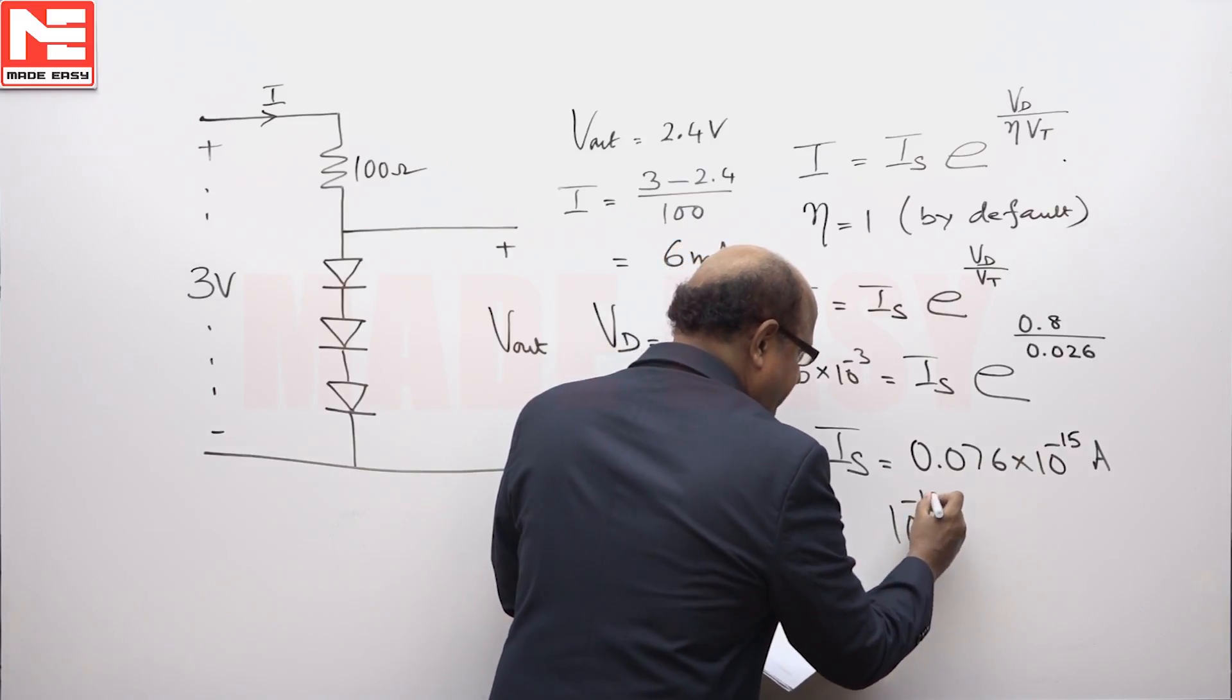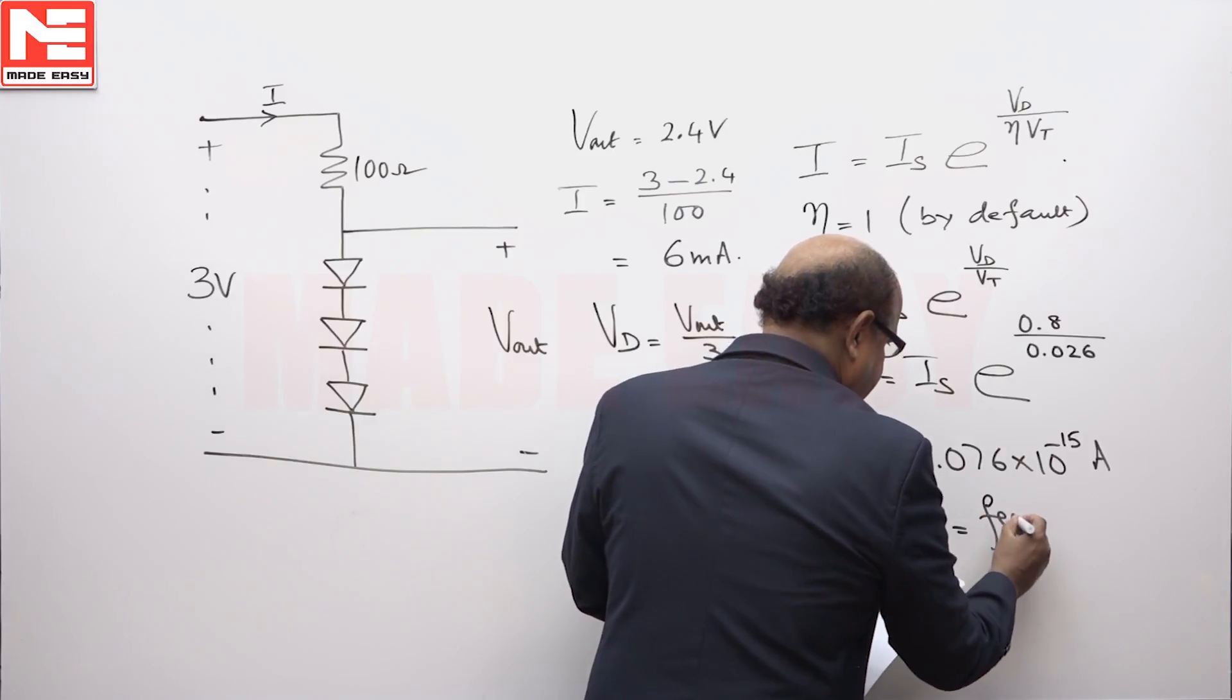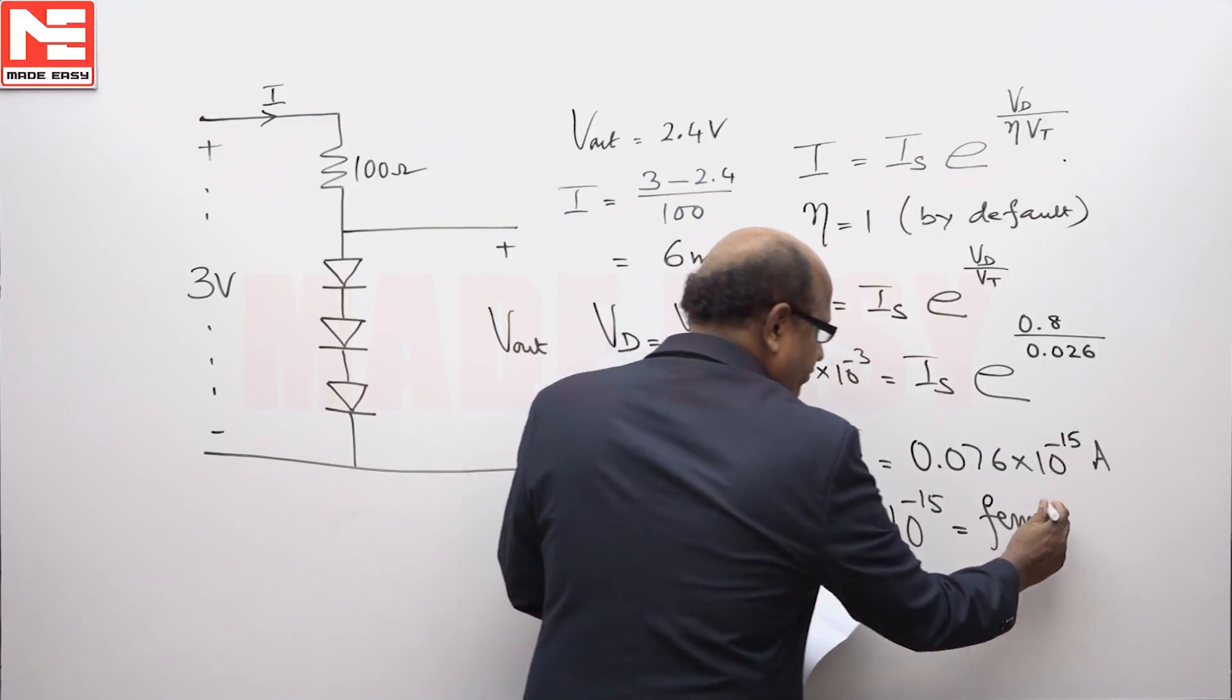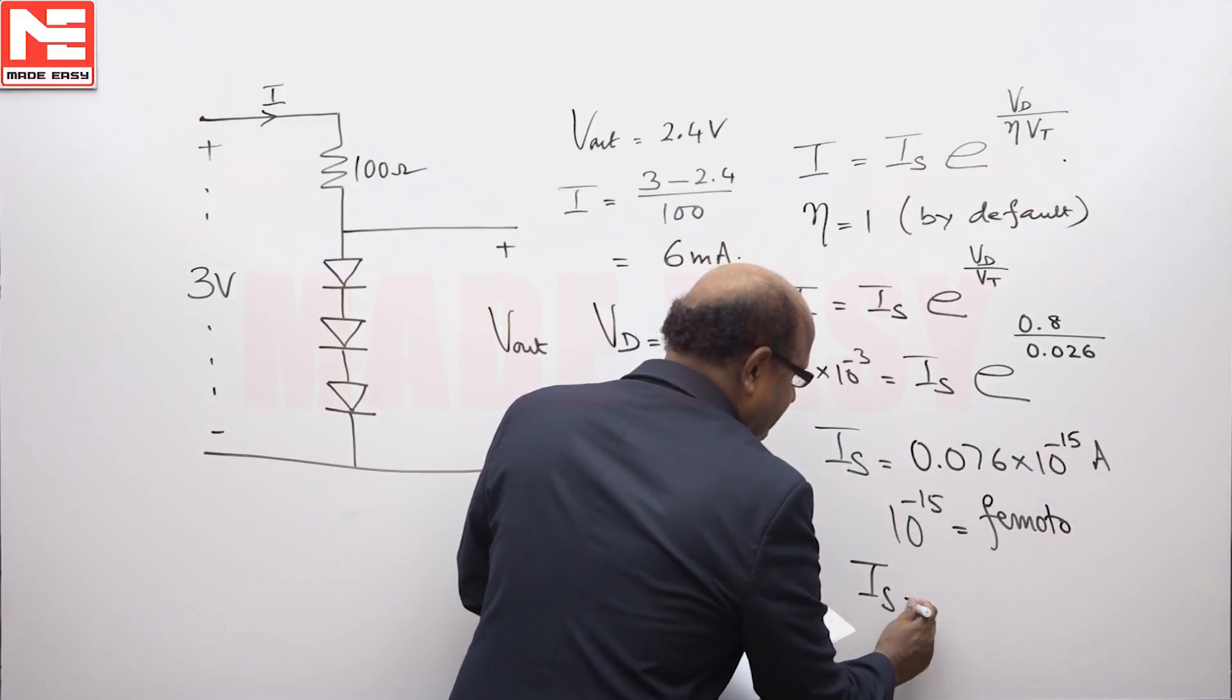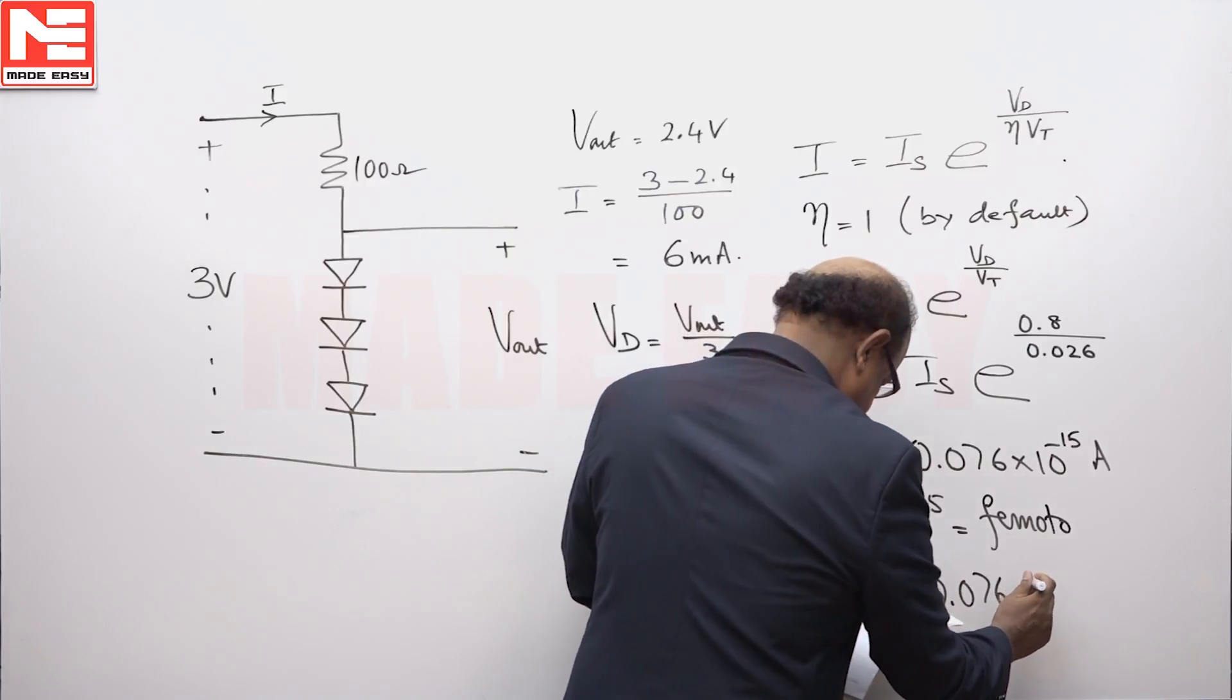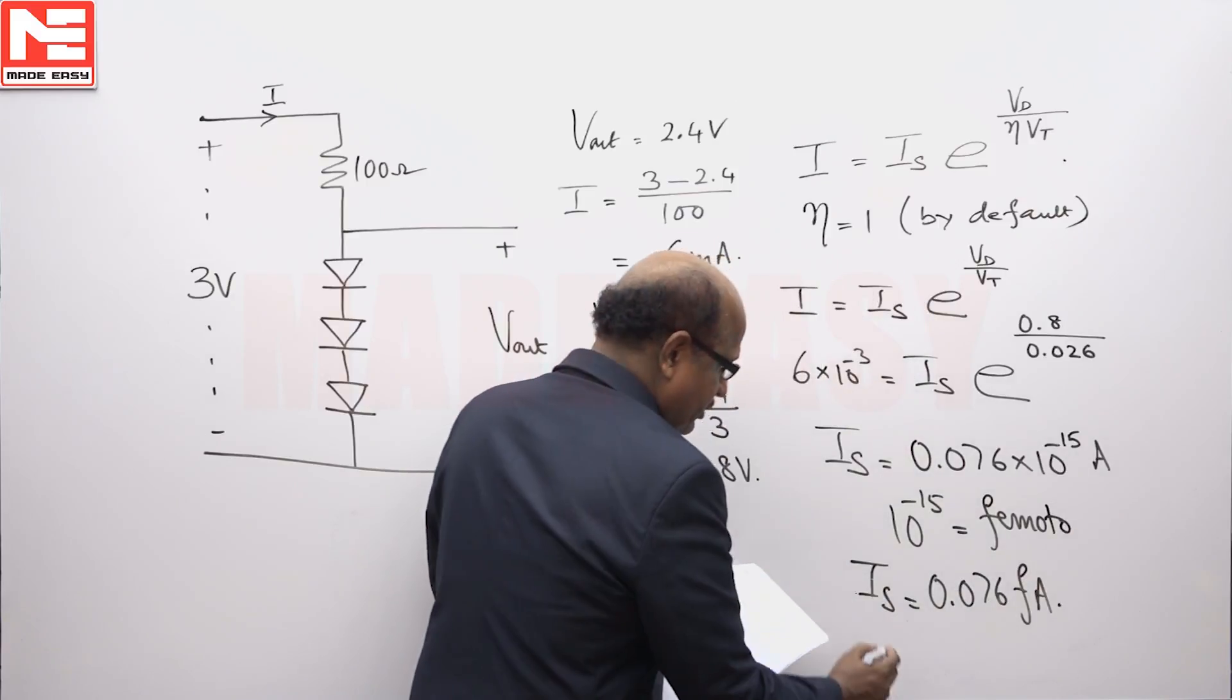10 to the minus 15 amperes equals femtoamperes. Therefore, the current I_s will be equal to 0.076 femtoamperes.